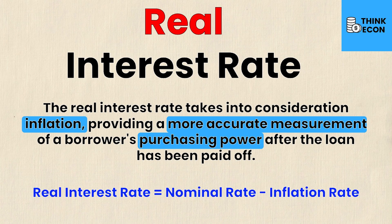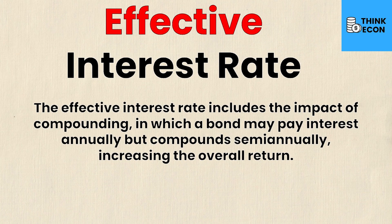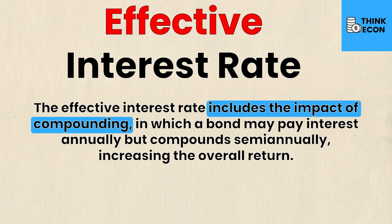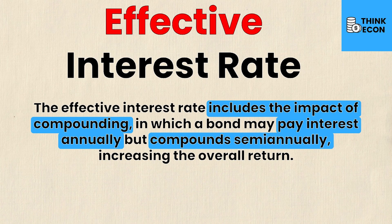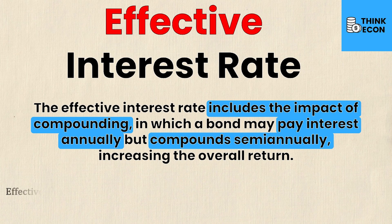Finally, we have the effective interest rate, which includes the impact of compounding. For example, a bond may pay interest annually but compound semi-annually, increasing the overall return beyond what it looks like nominally. Similar to the real interest rate, it has a formula: effective interest rate = (1 + nominal rate / number of compounding periods) raised to the power of the number of compounding periods, minus one.